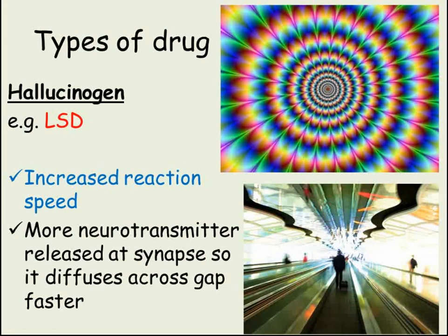Finally, hallucinogens change the way we perceive or experience the world around us. LSD is an example of a hallucinogen. These cause the messages that our brain receives, which would allow us to understand what's going on around us, to be very confused, so that the way we respond to things that we're seeing, hearing or feeling might well be very different to what's normal.